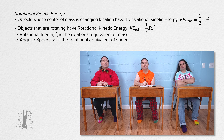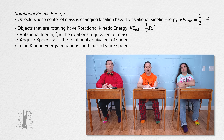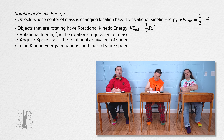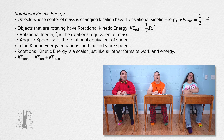While it looks like v and omega are velocities, technically in the kinetic energy equations they are speeds. Rotational kinetic energy is a scalar just like all other forms of work and energy. The total kinetic energy of a rigid object is the addition of its rotational kinetic energy about its center of mass and its translational kinetic energy from the linear motion of its center of mass.